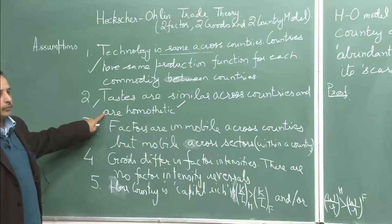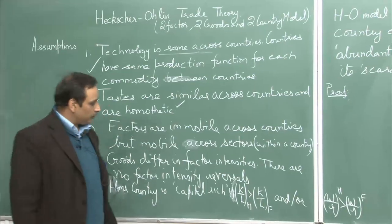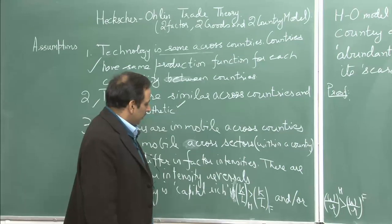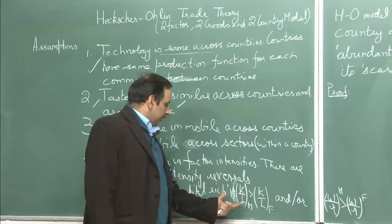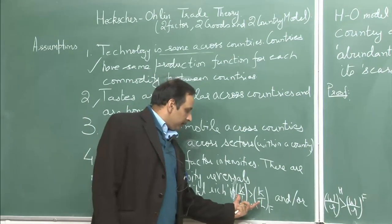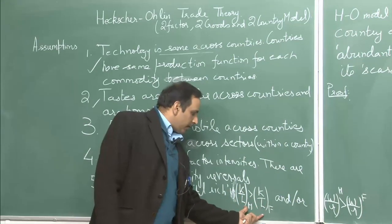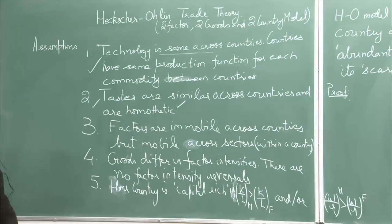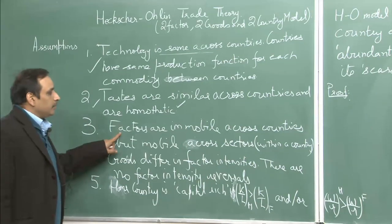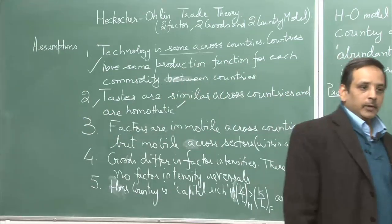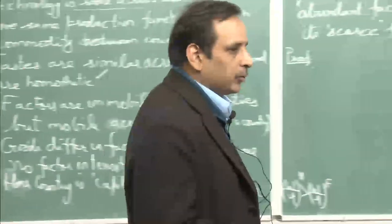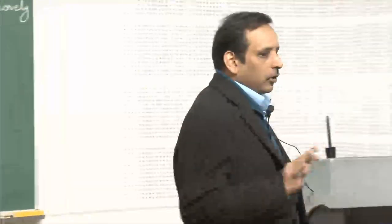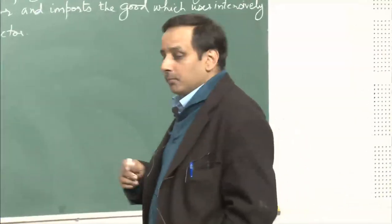This assumption — that tastes are similar and homothetic — is required to prove the Heckscher-Ohlin trade theory if you use one of the definitions of abundance. You require that tastes should be similar across countries and homothetic. Factors are immobile across countries. This is one big assumption, because Heckscher and Ohlin were talking about the economy when World War One had just happened and every country had put a lot of protectionist measures. So they are talking about economies where factors are immobile across countries.